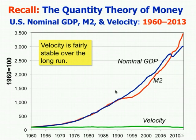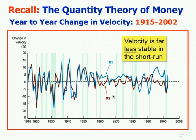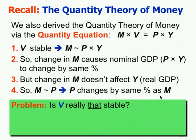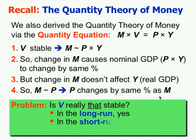But if you look at velocity on a year-to-year basis, here's the percentage change in velocity from year to year, 1915 to 2002. Velocity could be 15% higher one year, 18% lower the next — velocity does change from year to year. Obviously because it goes back and forth, in the long run it stays about the same, but in any given year velocity is less stable in the short run. Is velocity really that stable? In the long run, yes. In the short run, no.